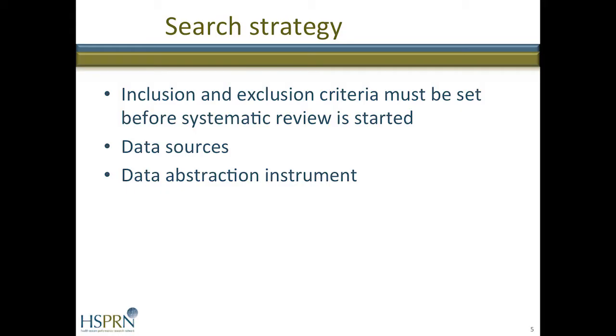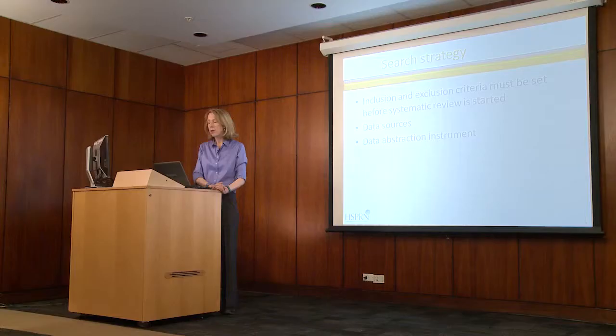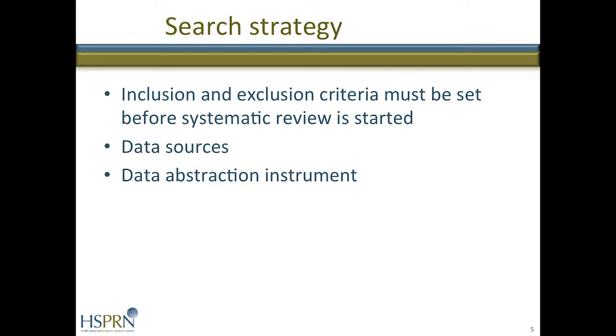Your research question really is going to drive how you look for the data. A good protocol needs to include a search strategy, which includes the inclusion and exclusion criteria used to evaluate which studies will be included in the review. The data sources include electronic sources like Medline, Embase, or Scopus, hand searching of journals, as well as the reference lists of key articles and existing literature reviews. The protocol also needs to include a data abstraction instrument, typically a table used to extract the relevant data from the studies.